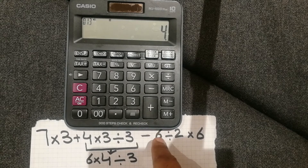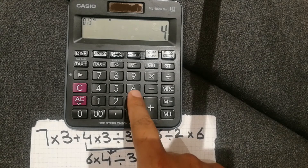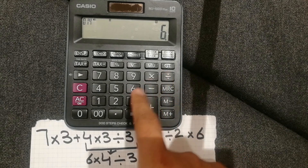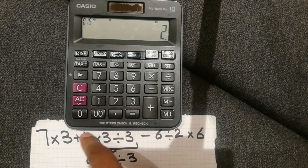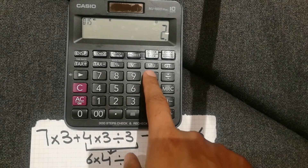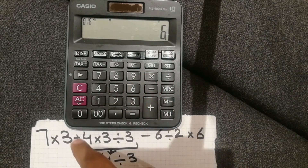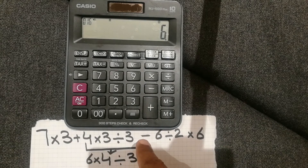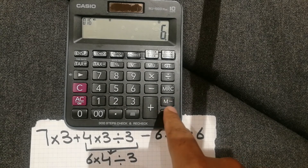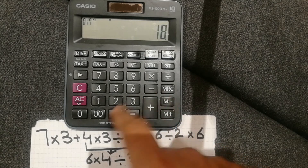Then I move on to the last step, which is 6 divided by 2 multiplied by 6. You can see this is with a minus sign, so I press the M minus button.